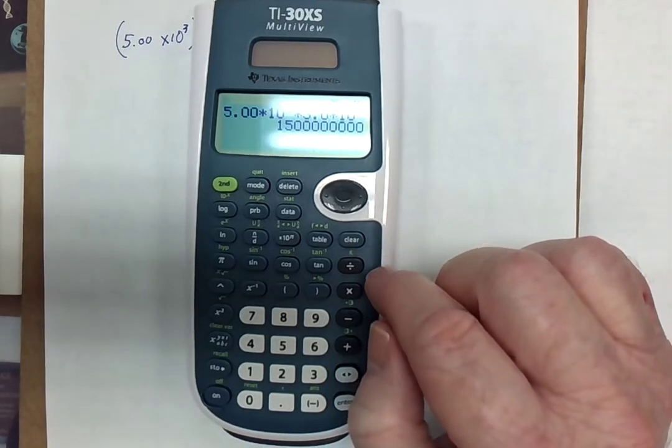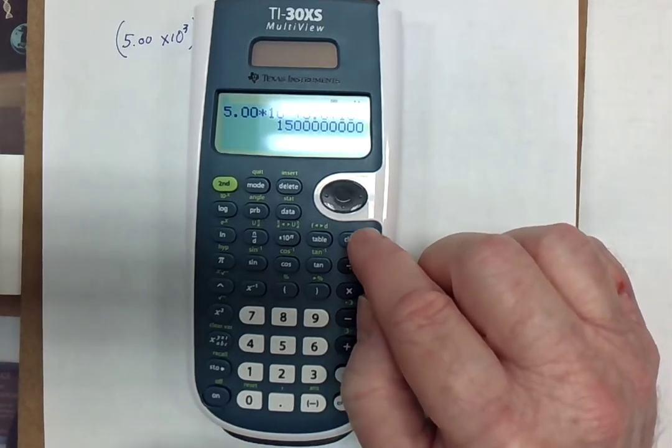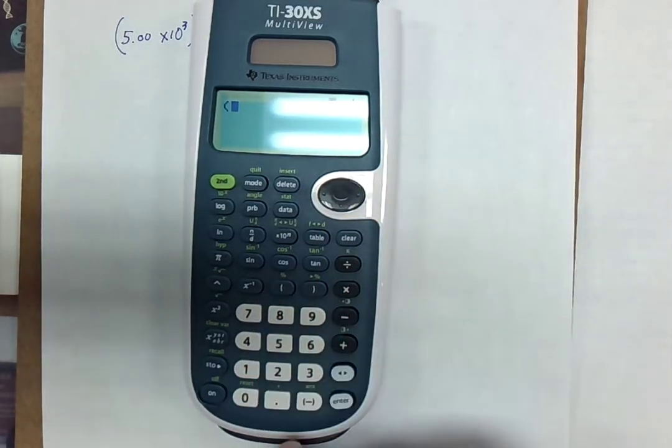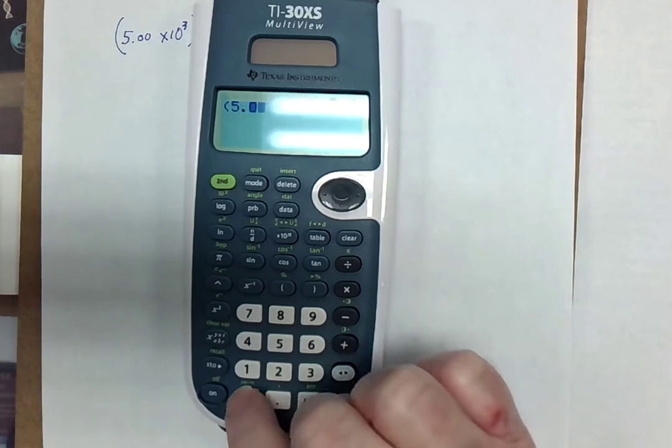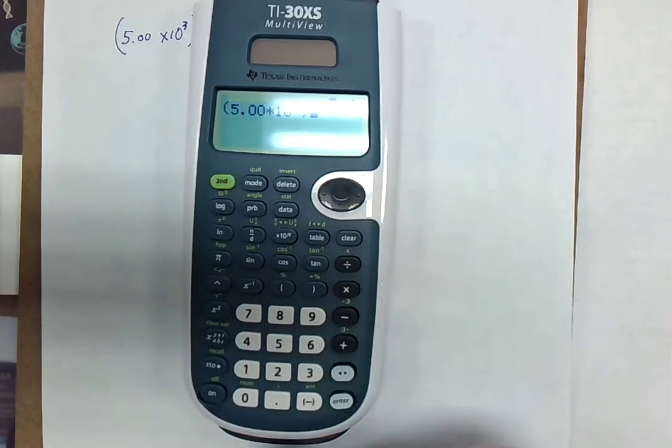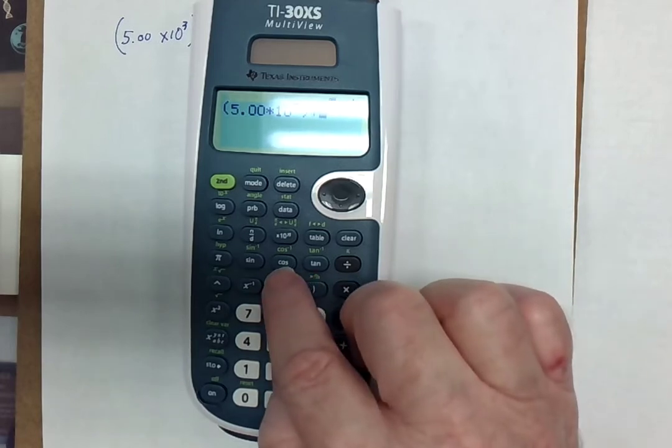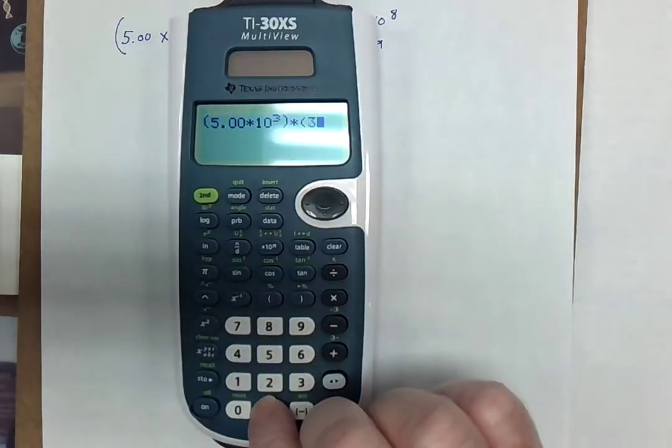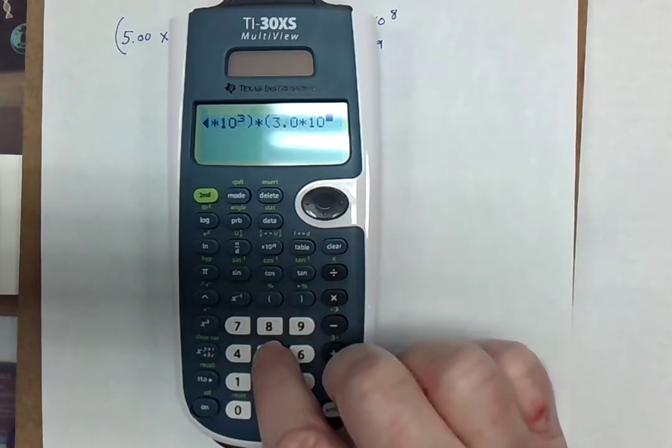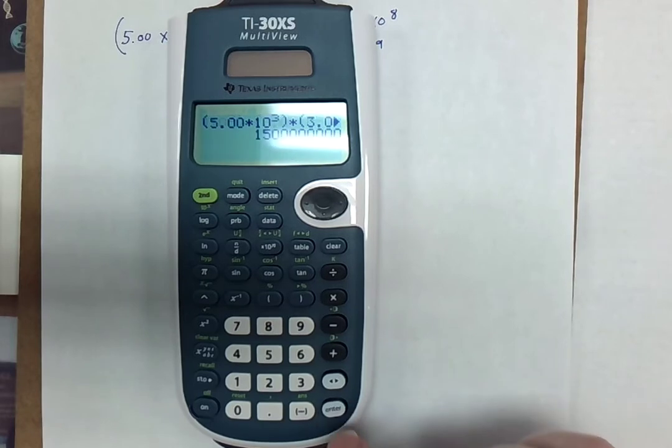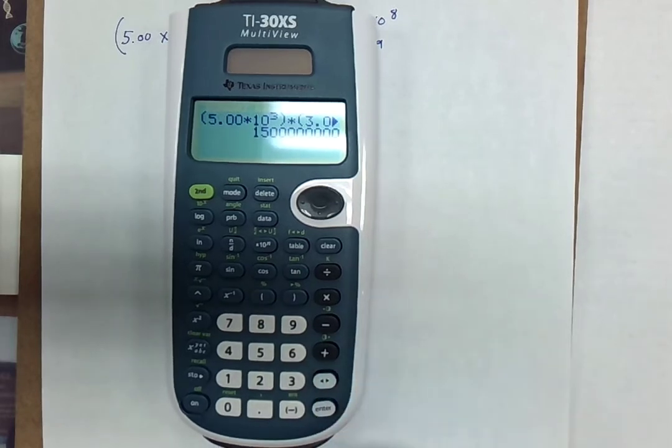Now, typically, I'm more comfortable with this calculator doing it just a little bit differently. Clear that out. Open parentheses, 5.00 times 10 to the third, space, close parentheses, multiplied by open parentheses, 3.0 times 10 to the fifth, space, close parentheses, enter, and get that. I think that's a better way to do it.